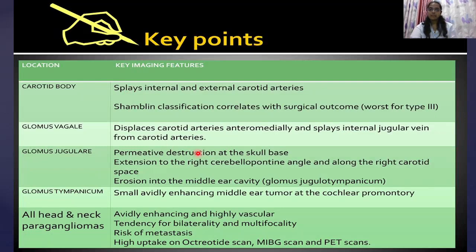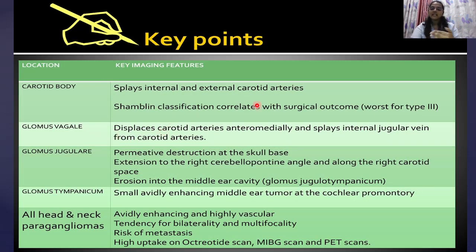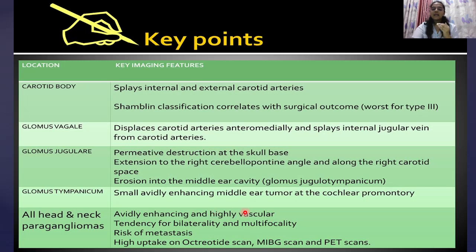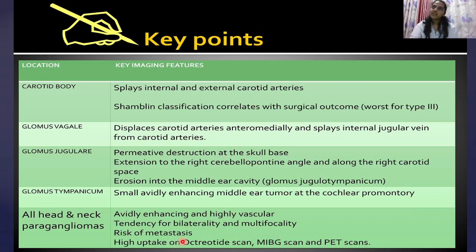The key points of head and neck paragangliomas: carotid body tumors cause splaying of the internal and external carotid arteries. Glomus vagale lies along the vagal trunk posterior-lateral to the carotid vessels, displacing them anteromedially and splaying the internal jugular vein with the carotid vessels. Glomus jugulare are skull-base tumors causing permeative bone destruction, potentially extending to the cerebellopontine angle and carotid space. Glomus tympanicum are in the middle ear at the cochlear promontory. All are highly vascular and avidly enhancing, with a tendency for bilaterality or multifocality, potential for metastasis, and high uptake on PET, MIBG, or octreotide scans.